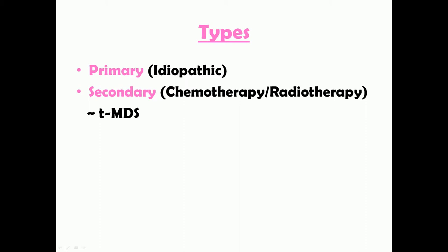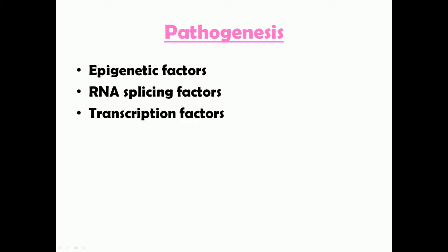There are basically two types of myelodysplastic syndromes: primary MDS, also known as idiopathic, and secondary MDS. The idiopathic type is the most common and its pathogenesis is unclear. Secondary MDS is caused by cancer chemotherapy drugs or following radiotherapy, abbreviated as t-MDS, and it is more severe compared to the primary type.